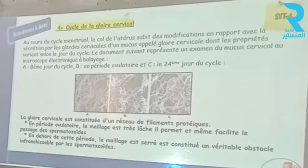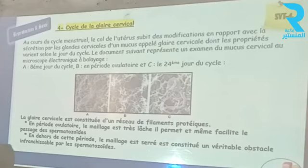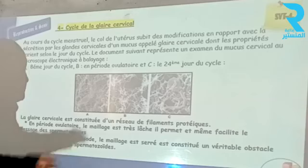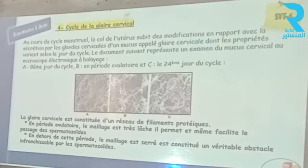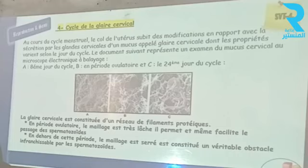La glaire cervicale est constituée d'un réseau de filaments protéiques et montre des modifications tout au long du cycle. Pendant la période ovulatoire, le maillage se relâche, permettant et facilitant le passage des spermatozoïdes. En dehors de cette période, le maillage est serré et constitue un véritable obstacle empêchant le passage des spermatozoïdes vers les organes génitaux internes. La glaire cervicale est donc un filtre, un milieu de sélection : favorable pendant la période ovulatoire, hostile au passage des spermatozoïdes au-delà.